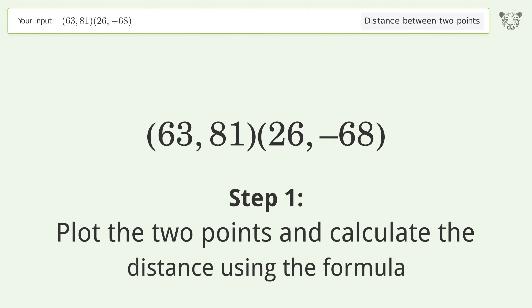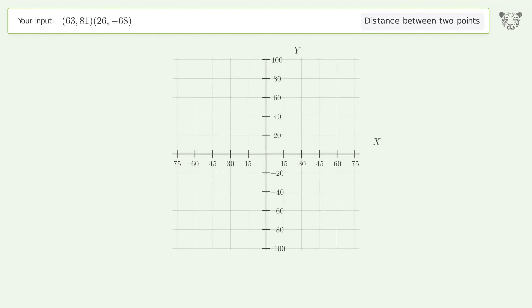Step 1: Plot the two points and calculate the distance using the formula. The coordinates of Point 1 are X1 equals 63 and Y1 equals 81. The coordinates of Point 2 are X2 equals 26 and Y2 equals negative 68.